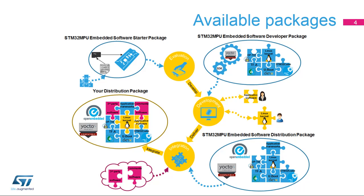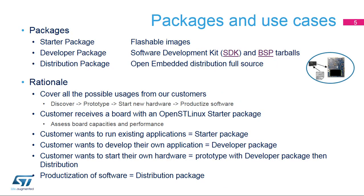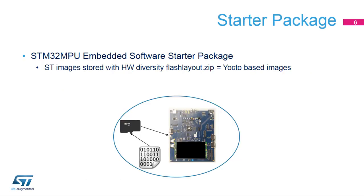The three packages address platform evaluation, application or kernel development, and integration and product delivery. The starter package allows a quick and easy means to get any STM32 microprocessor development platform up and running. An STM32 microprocessor development platform, such as the STM32MP-157CEV1 evaluation board, and a microSD card populated with the software image delivered for this platform are all that is required to discover the platform capabilities.